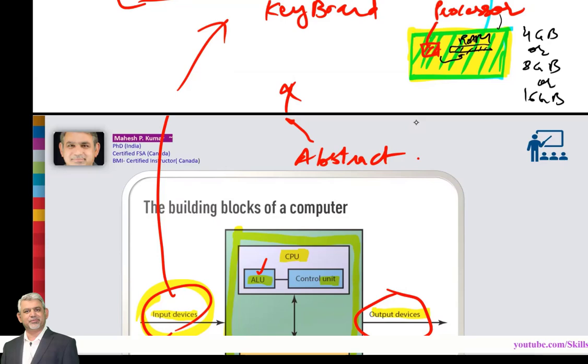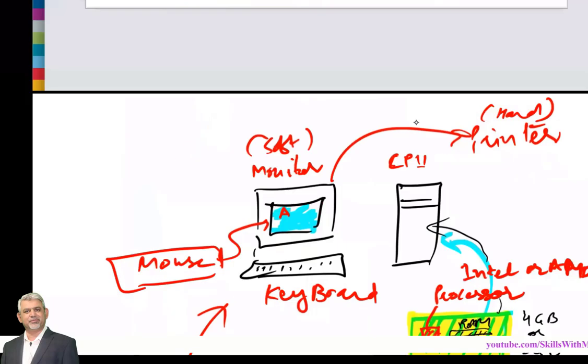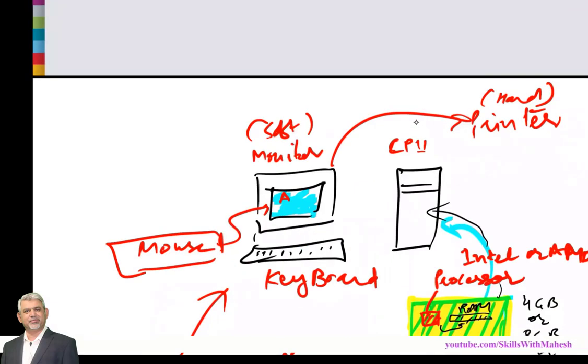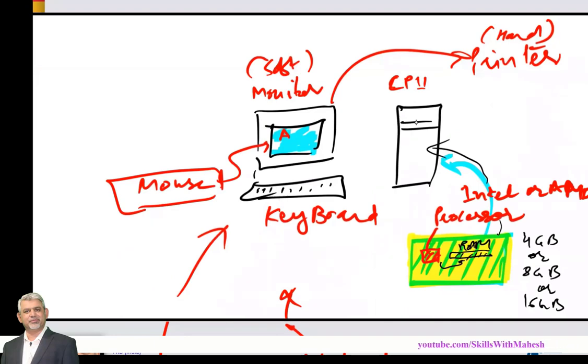All these are hardware things which I talked about. Hardware and software. Screen is hardware, keyboard is hardware, mouse is hardware, CPU is hardware, Intel processor is hardware, RAM random access memory is hardware.